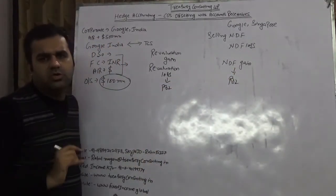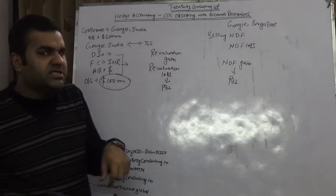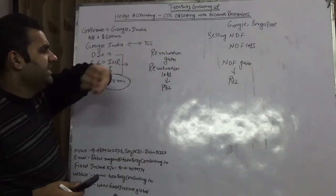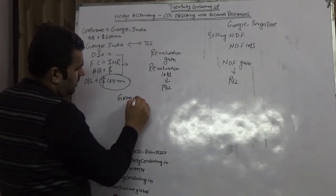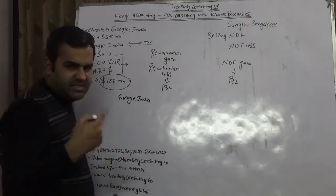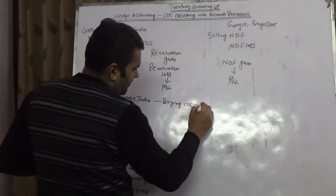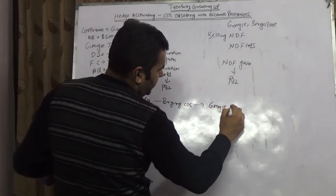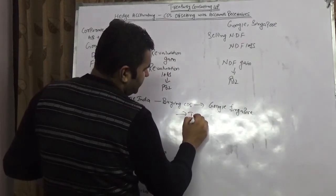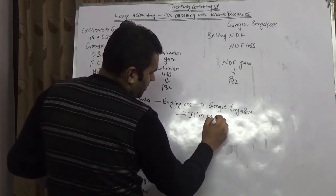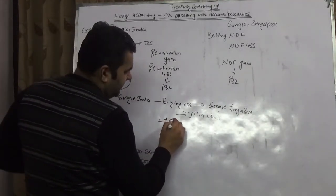This is the first role Google Singapore plays for Google India. But the problem we are discussing — the CDS problem — comes after the AR issue. Google India is buying a CDS via Google Singapore, and assuming the CDS seller is JP Morgan Chase Singapore. The quote given is LIBOR plus 150 basis points.